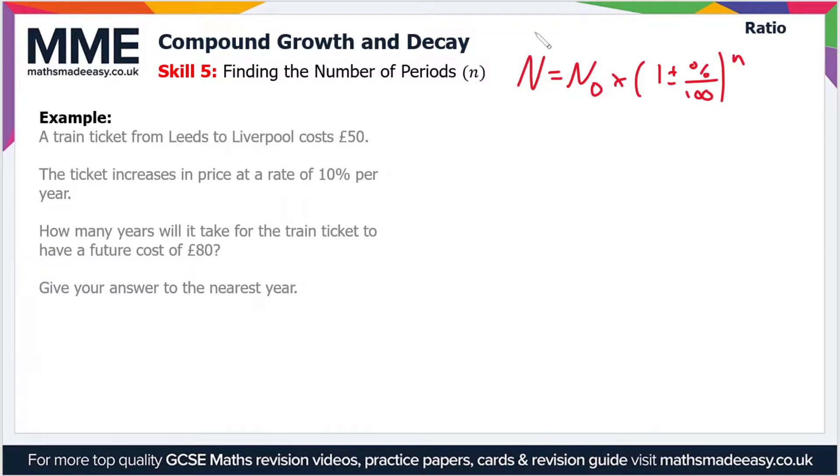It's N equals N naught times one plus or minus the percent increase or decrease divided by 100 to the power of n. So we're specifically interested in this value n.